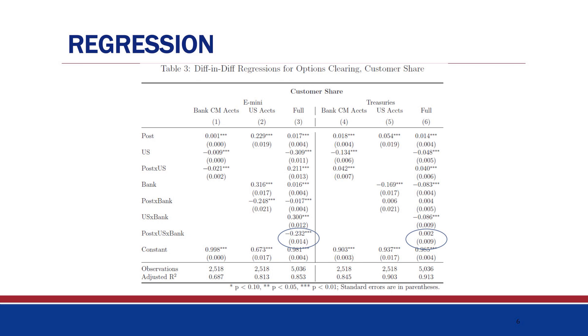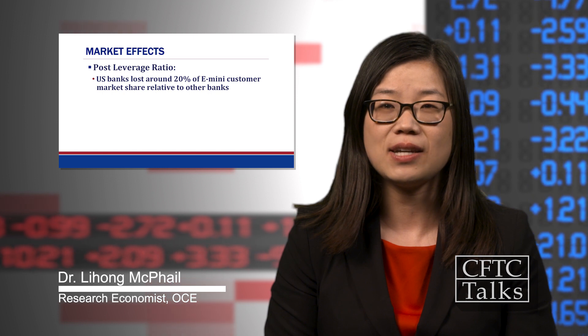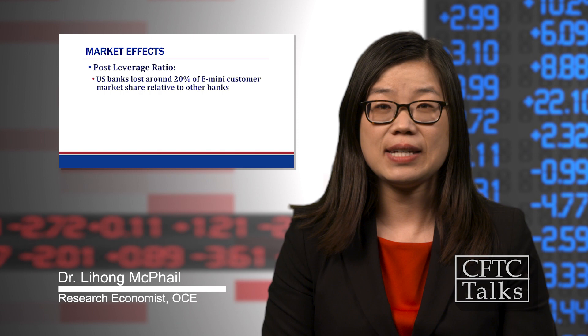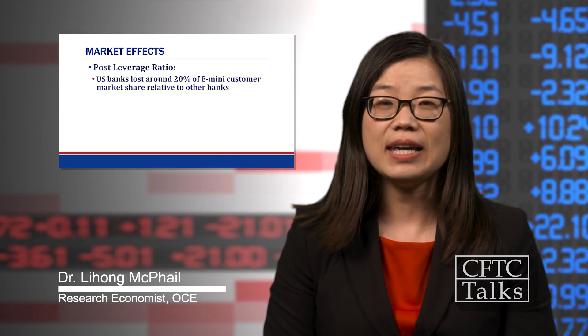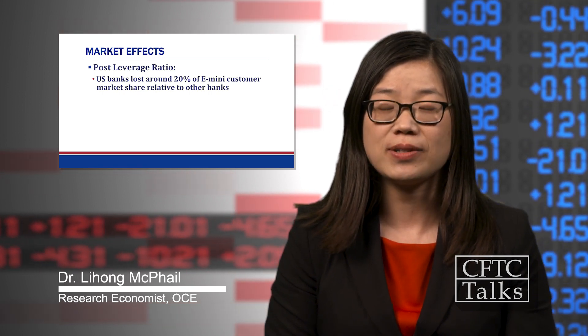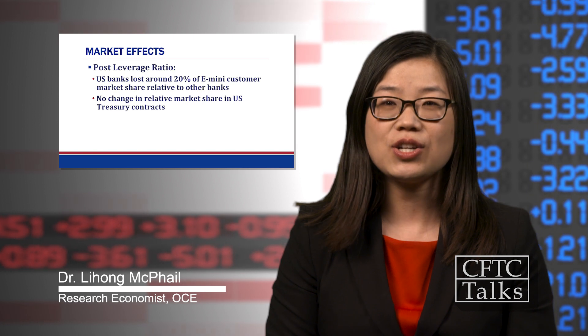We have highlighted the key coefficients in this table, which summarizes the change in customer market share for U.S. banks after the introduction of the leverage rule. This coefficient is negative and significant, indicating a loss of market share for U.S. banks for E-mini options. In contrast, this coefficient is positive and insignificant for treasury options. A number of additional regression comparisons can be found in the paper, such as changes in the amount of low delta clearing done relative to high delta clearing.